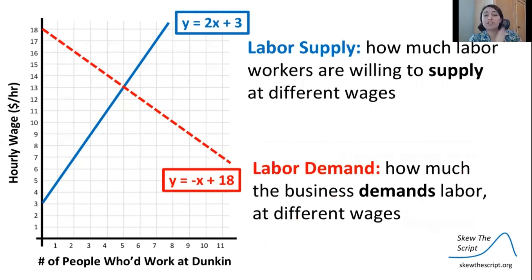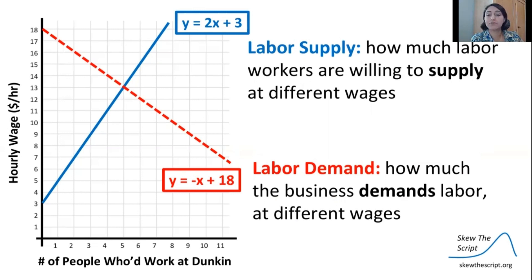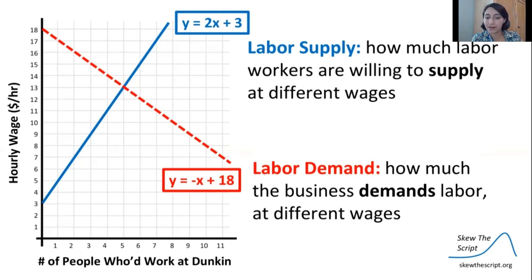So in economics, we call this our labor supply curve and labor demand curve. The labor supply curve is our blue line — that's how many workers are going to be willing to work at a particular place given a variety of different wages. And then the red line is from the business's perspective — that's our labor demand curve. That's how much labor the business demands, meaning how much they are willing and able to hire at a variety of different wages.